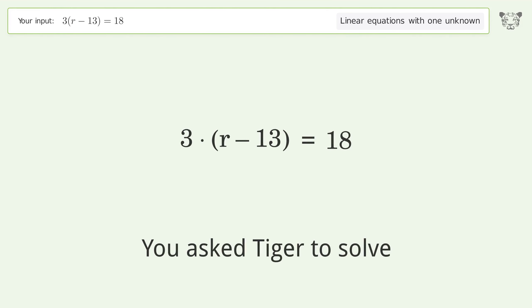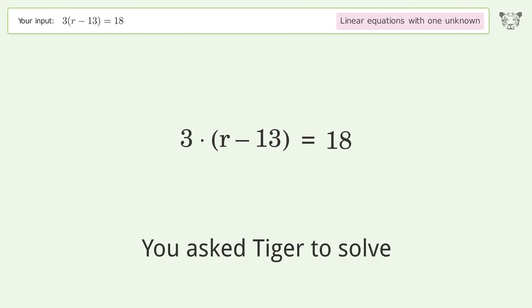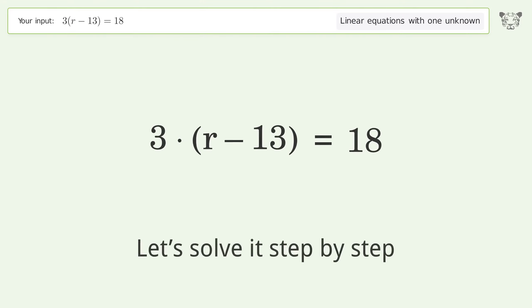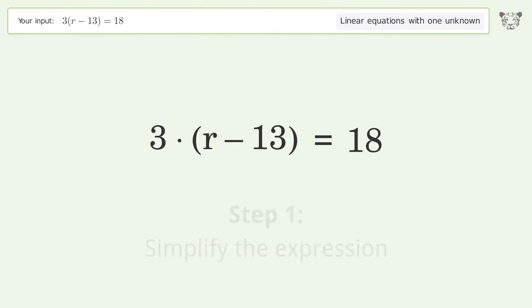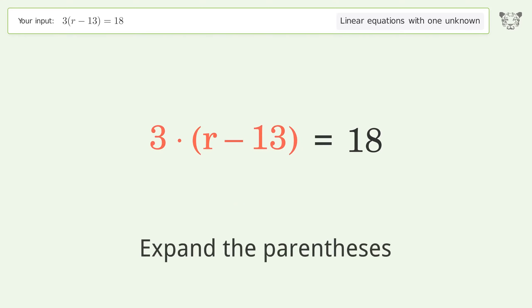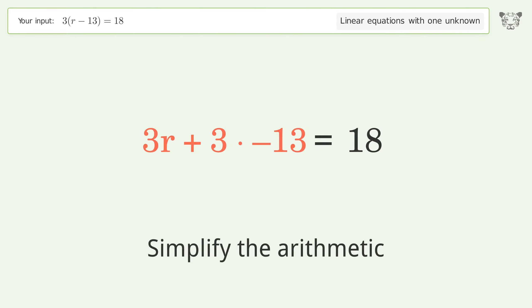You asked Tiger to solve this — it deals with linear equations with one unknown. The final result is r equals 19. Let's solve it step by step: simplify the expression, expand the parentheses, and simplify the arithmetic.